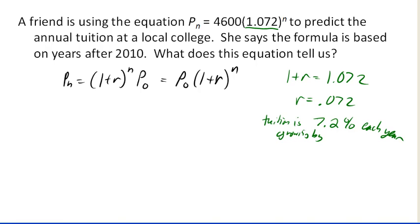So our second value here, 4,600, is the value that's multiplying times the 1 plus r to the n, and so it's our value for P0. So we know that P0 is 4,600.